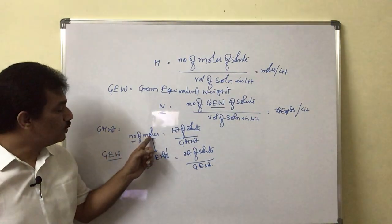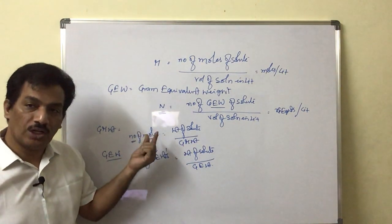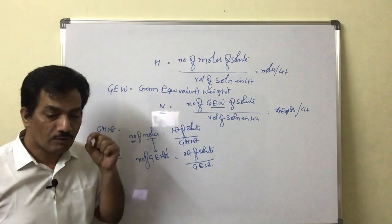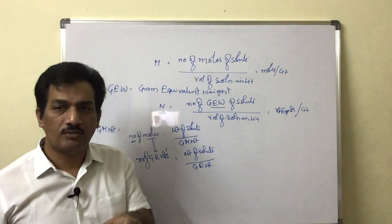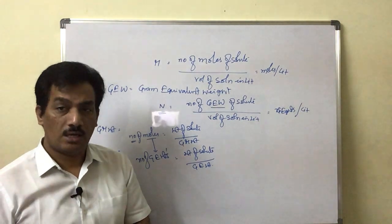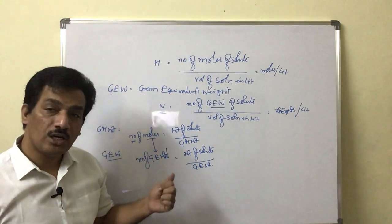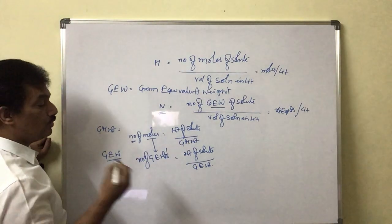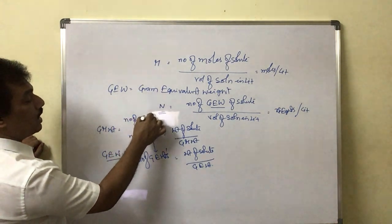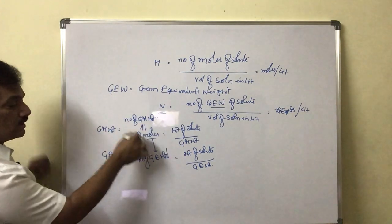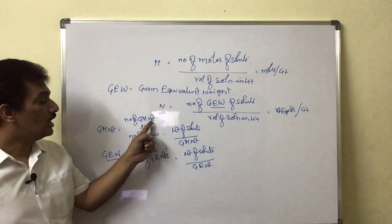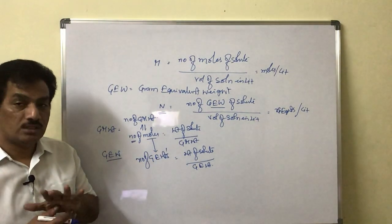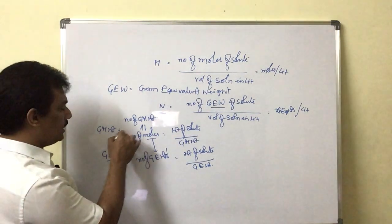Number of moles is nothing but the number of gram molecular weights present in the solution. In case of gram molecular weights, there is another word — 'mole' — that's why we call it number of moles. But in the case of number of gram equivalent weights, there is no other term like 'mole,' that's why we directly use the term 'number of gram equivalent weights.' Both expressions are essentially equivalent in concept.